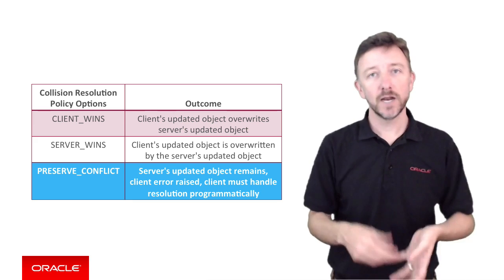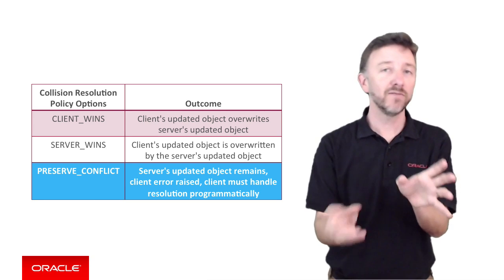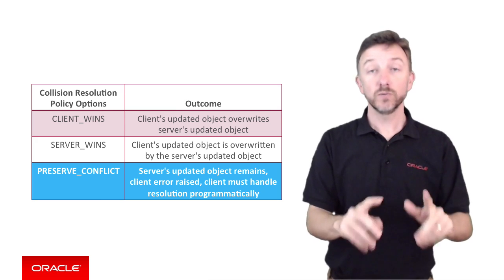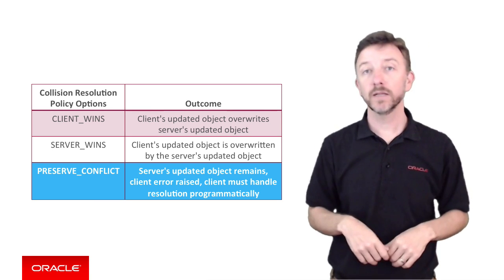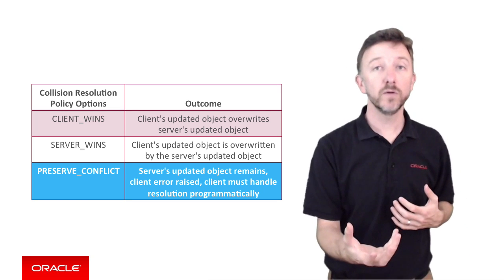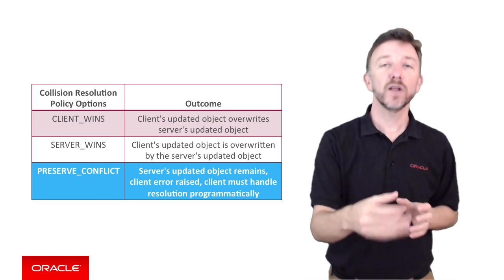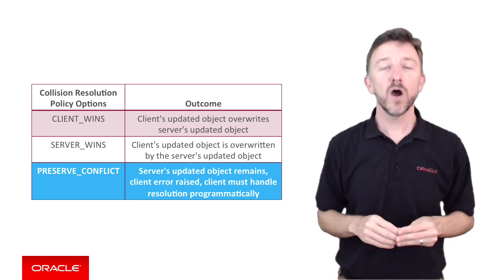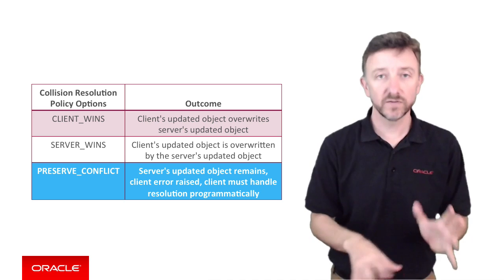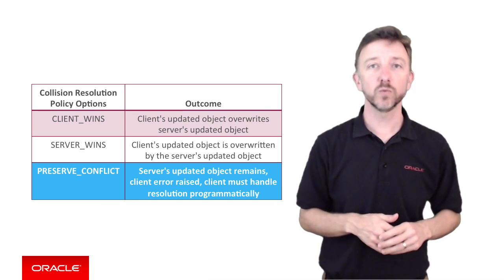The preserve conflict option provides a halfway house between client wins and server wins. In the same scenario — downloading an object, locally updating it, and discovering another user subsequently updated it on the server — the preserve conflict option raises an error on the client and allows you to programmatically resolve it. For example, you could take the server's updated object and your local updated object, merge the changes, and flush the merged result back to the server. These conflict resolution policies handle a lot of complex logic that would otherwise require significant custom code.